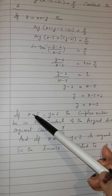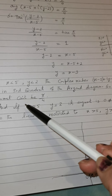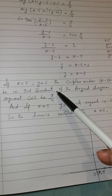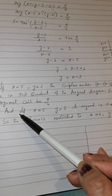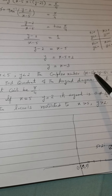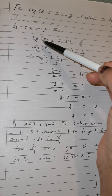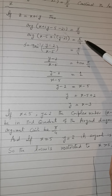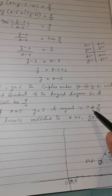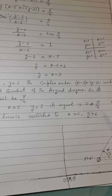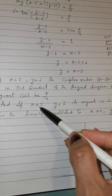If x < 5 and y < 2, the complex number lies in the third quadrant, so the argument cannot equal π/4. Also, if x = 5 and y = 2, then (x − 5) + (y − 2)i = 0, and the argument of 0 is undefined, so it cannot equal π/4 either. Neither of these conditions applies.